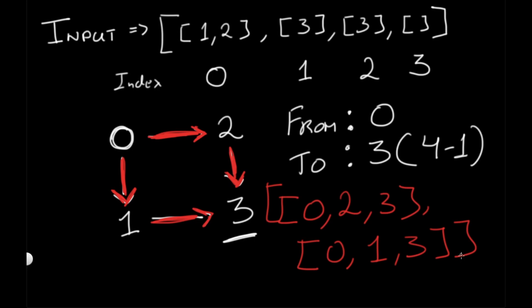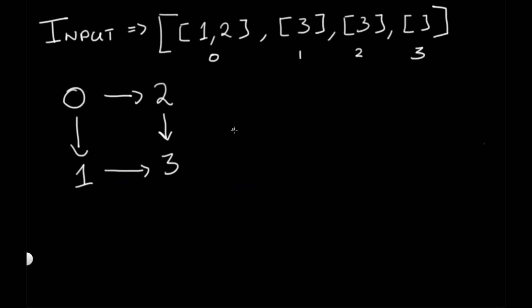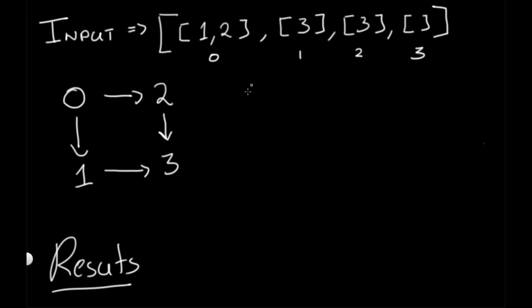To solve this we can take two approaches — depth-first search or breadth-first search. We're going to use a breadth-first search approach. We'll have a results list and implement a queue. The queue is going to start off containing a list with just the value 0.